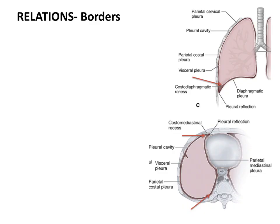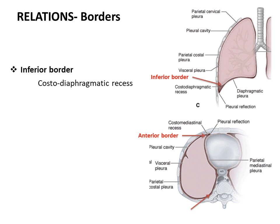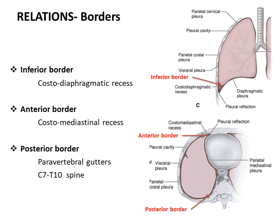The relations of the borders of the lung: the inferior border occupies the costodiaphragmatic recess and the anterior border occupies the costo-mediastinal recess of pleura. The posterior border lies in the depression on either side of the vertebra called the paravertebral gutters. It is related to the 7th cervical to the 10th thoracic spines.